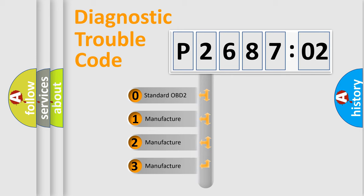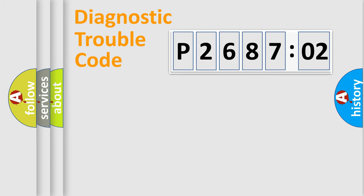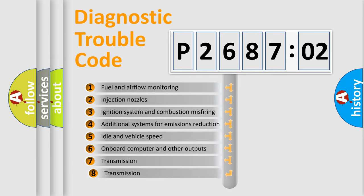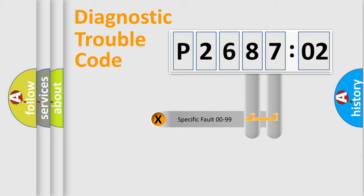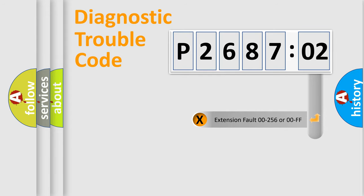If the second character is expressed as zero, it is a standardized error. In the case of numbers 1, 2, or 3, it is a more specific expression of a car-specific error. The third character specifies a subset of errors. This distribution is valid only for the standardized DTC code. Only the last two characters define the specific fault of the group. The add-on to the error code serves to specify the status in more detail.